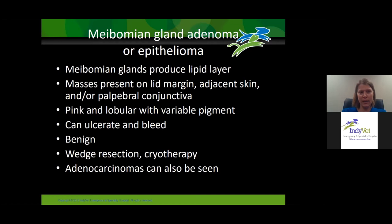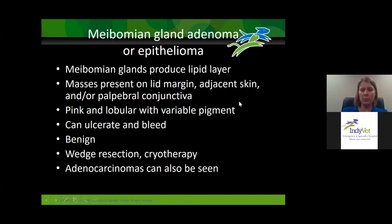I'm going to first start talking about a really common eyelid mass called a meibomian gland adenoma. There's also a variant called an epithelioma — these tumors are very similar in behavior, though the epithelioma is a little more likely to recur post-treatment. Meibomian glands produce the lipid layer of the tear film. Since the glands are in the center of the eyelid, these masses can be present on the lid margin, on the adjacent skin, or on the palpebral conjunctiva — sometimes all three locations.